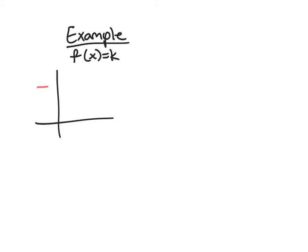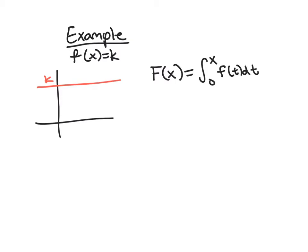Let's start with a simple example. We'll take a constant function f(x) = k, and look at the area function — which I'll call big F — defined as the integral from 0 to x of f(t) dt. We're choosing 0 as our starting point a, though we could choose different values, and we'll look at that after this example.